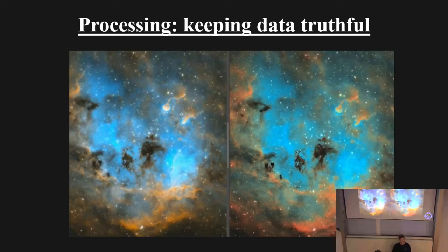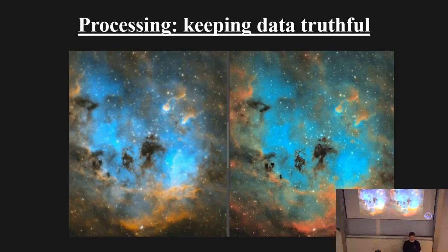A good example of an acceptable AI tool is one called StarNet or BlurXterminator — trained specifically on Hubble images and therefore better at knowing what space images should look like, so it mostly doesn't add structures that aren't there. Topaz is considered unacceptable because it does corrupt images like that. It's a bit of a minefield, but something astrophotographers need to consider.